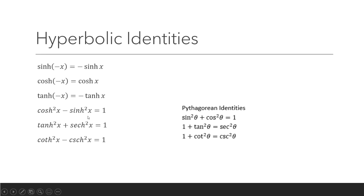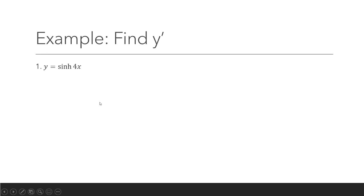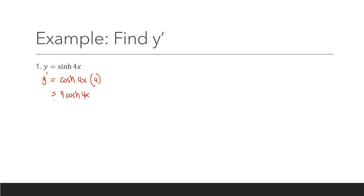Let's look at some examples. Find y prime where y is equivalent to hyperbolic sine of 4x. Recalling the derivative rule, the derivative of hyperbolic sine is positive hyperbolic cosine. So we have hyperbolic cosine of 4x times the derivative of u, which is 4. Rewriting this, y prime equals 4 hyperbolic cosine of 4x. This is our final answer.